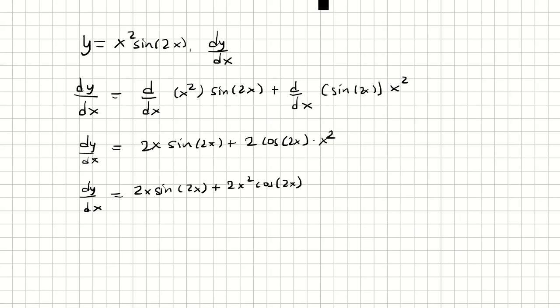From here we see that both terms have a factor of 2x, so we're going to factor that out. We're left with sine 2x plus x times cosine 2x. And that is our answer.